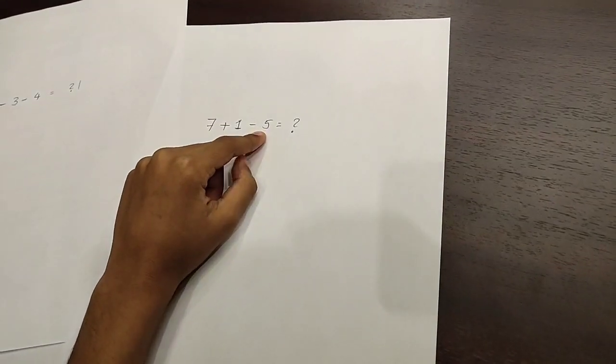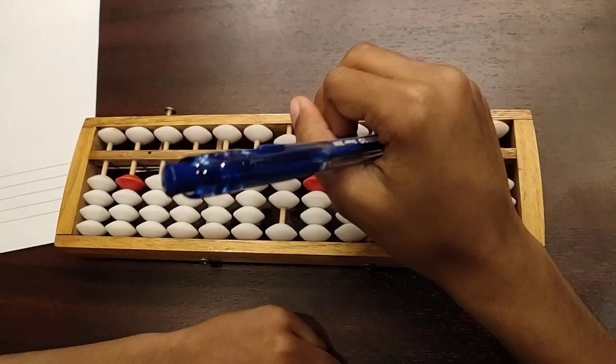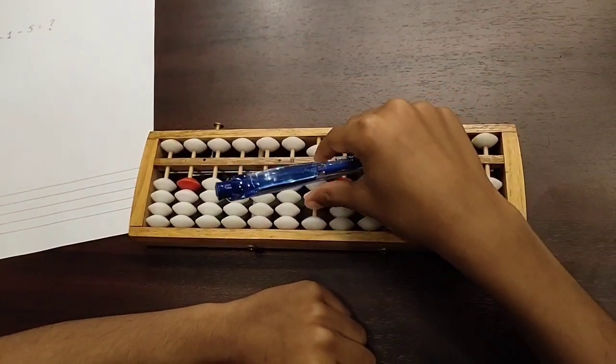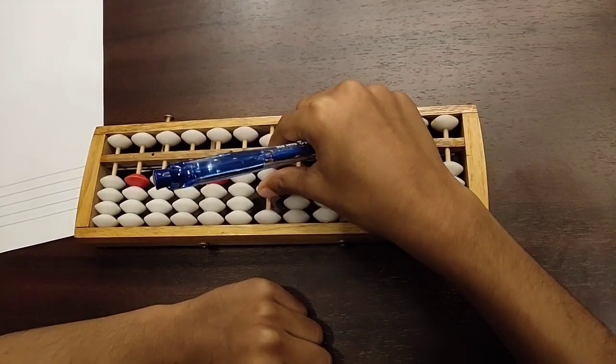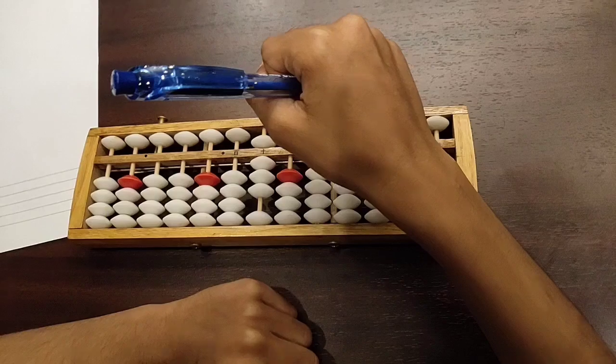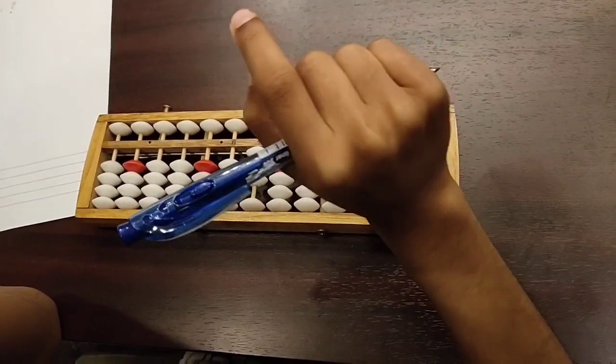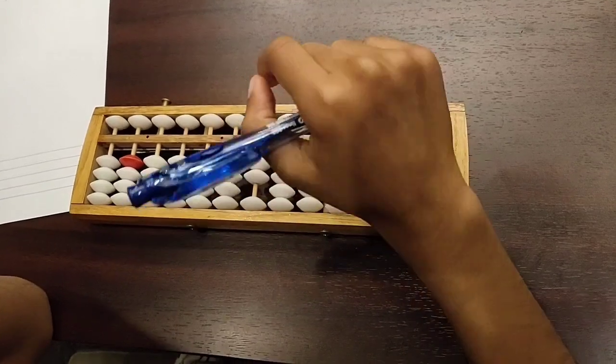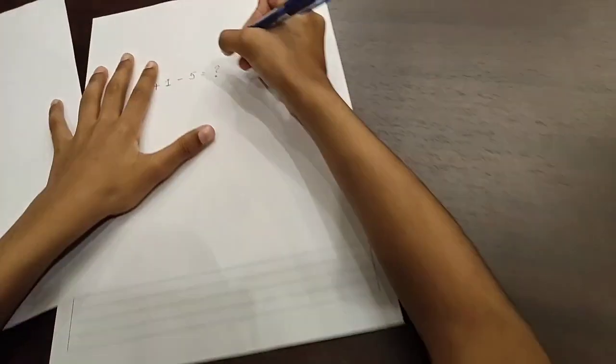Finally, you have to minus the last number which is 5. So we don't have enough beads to move down. So we have to move the top bead up which is minus 5. So we got the new number which is 3. So the answer is 3.